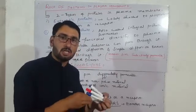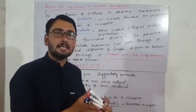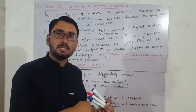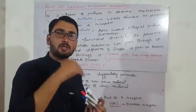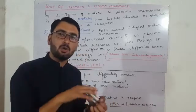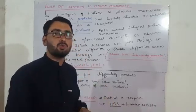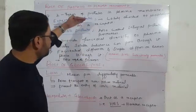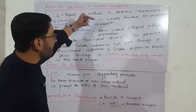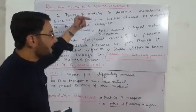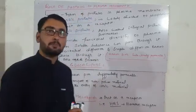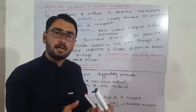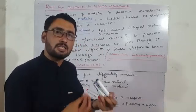The phospholipid heads are on either side — the inner side towards the cell or the outer surface. Extrinsic protein acts as a receptor to receive something, such as an incoming stimulus.